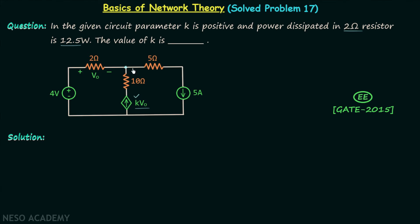Current in this branch is equal to k times v0. Current in this branch is equal to 5 amperes, and let's say current in this branch is equal to I.